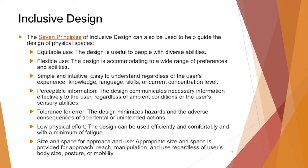Fourth is perceptible information: the design communicates necessary information efficiently to the user, regardless of ambient conditions or the user's sensory abilities. Fifth is tolerance for error: the design minimizes hazards and adverse consequences of accidental or unintended actions. Sixth is low physical effort: the design can be used efficiently and comfortably with a minimum of fatigue. Seventh is size and space for approach and use: appropriate size and space for approach, reach, manipulation, and use, regardless of the user's body size, posture, or mobility.